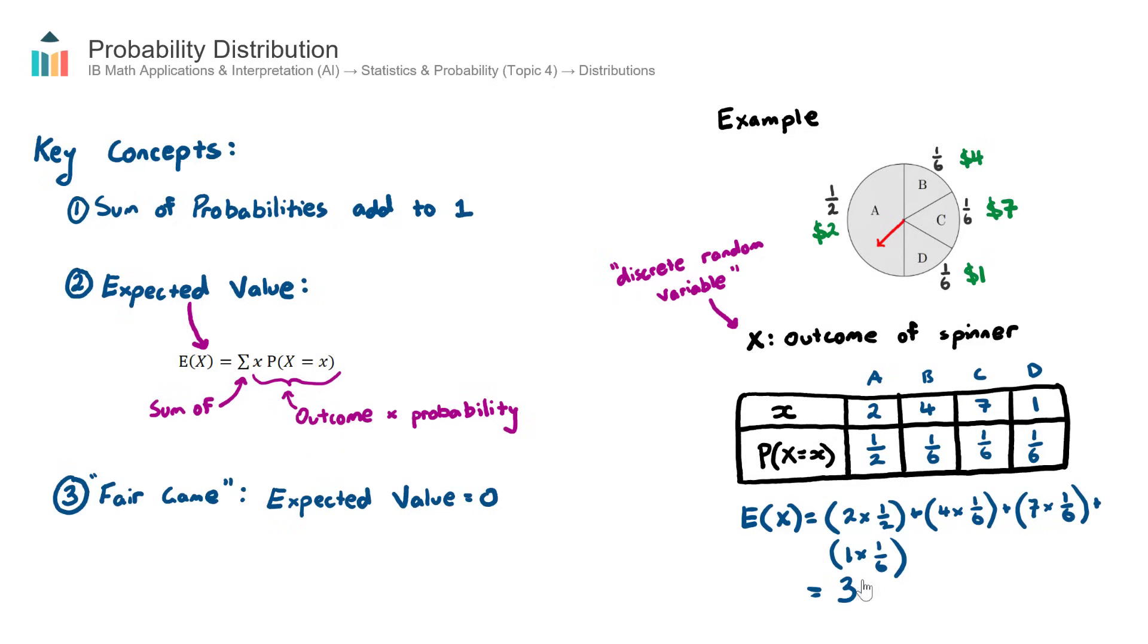Now the result of that would be for this particular question, the ticket price would need to be three to match the expected gain. So if our ticket price would be three, every game we play it would cost three, but I would expect to get back three. Therefore the net result would be zero and therefore that game would be fair.